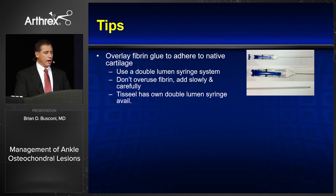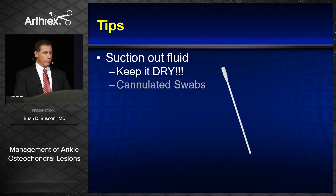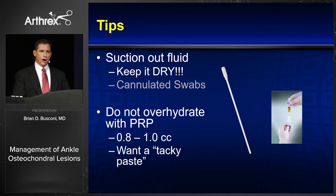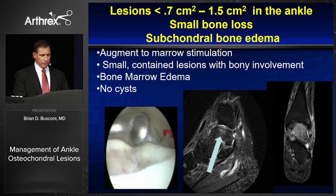Tips: the overlying fibrin glue must adhere to both the native cartilage and the transplanted material. Use a cannula and a fat pad retractor, making sure the area is dry. Make good vertical margins. They now have suction cannulas and Q-tips, which are very helpful for getting rid of any fluid within the joint. When you make your PRP, I do a candy cane-type preparation — putting micronized cartilage, then a layer of PRP, then more micronized cartilage — which makes it easier to mix and deliver.